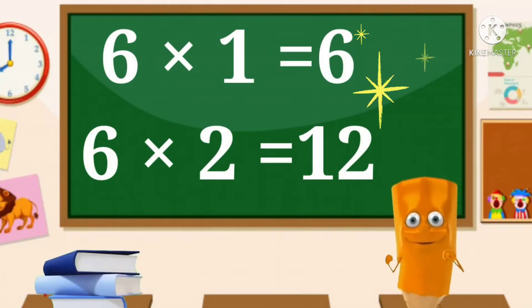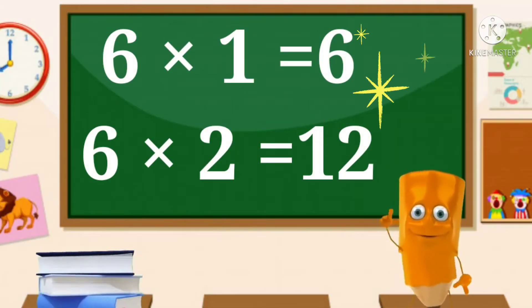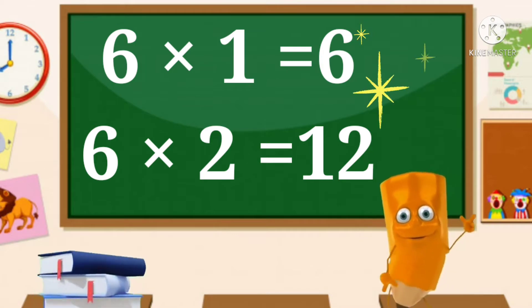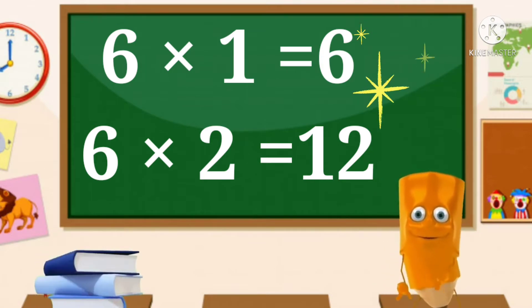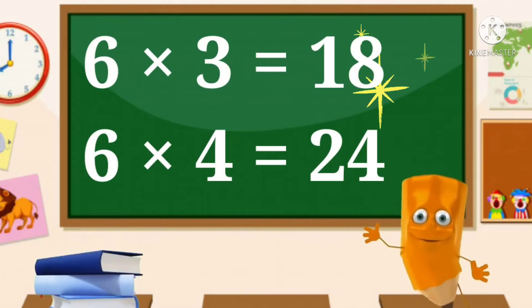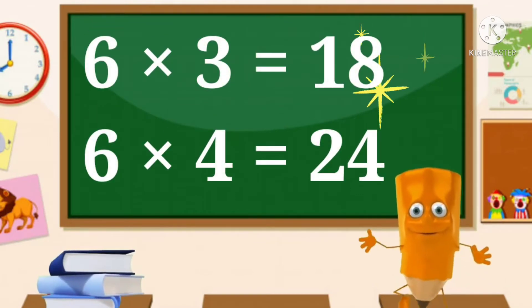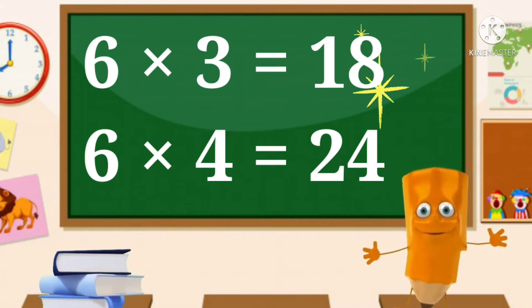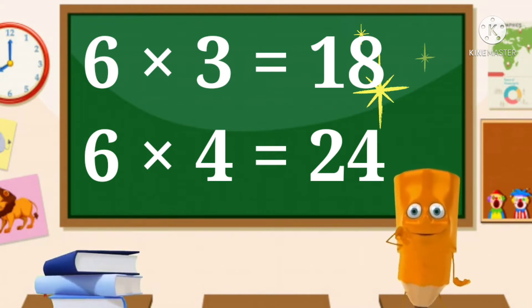6 ones are 6, 6 twos are 12. 6 ones are 6, 6 twos are 12. 6 threes are 18, 6 fours are 24. 6 threes are 18, 6 fours are 24.